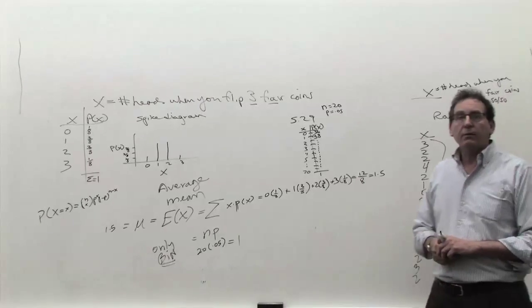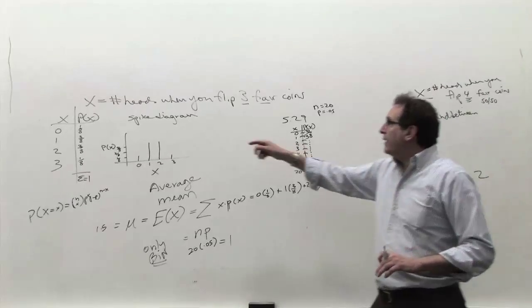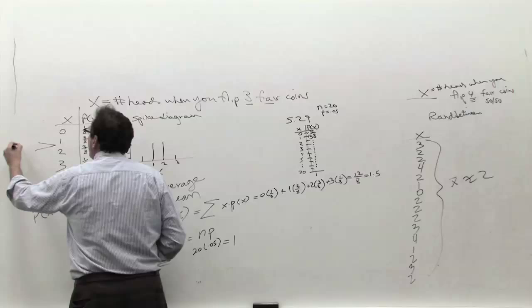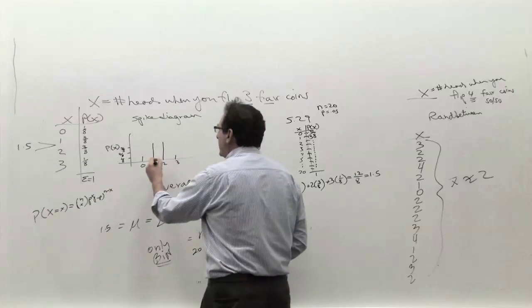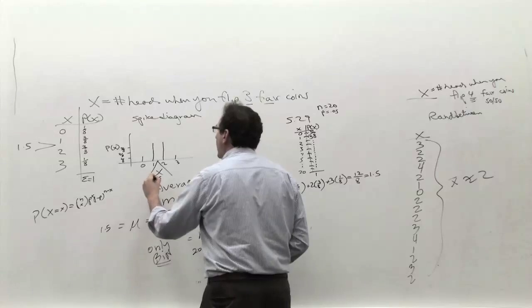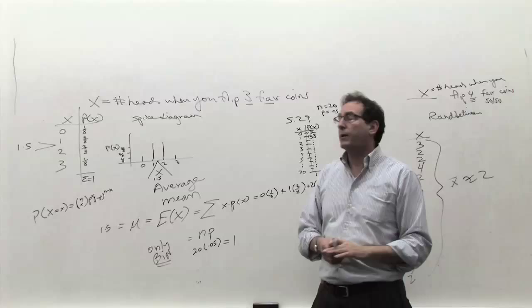That's called the standard deviation. Just like we're making the claim that on the average, you're going to get 1.5 heads. We're projecting it physically right in the middle here. 1.5 heads, which is right in the middle. You expect it to be in the middle in case of balanced or symmetric type of picture.